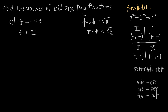We're starting with cotangent. We can easily find tangent because tangent is equal to 1 over cotangent. So tangent of theta is equal to 1 divided by negative 23, and pulling the negative sign out front gives us tangent equals negative 1 over 23. So we've already got those two knocked out.